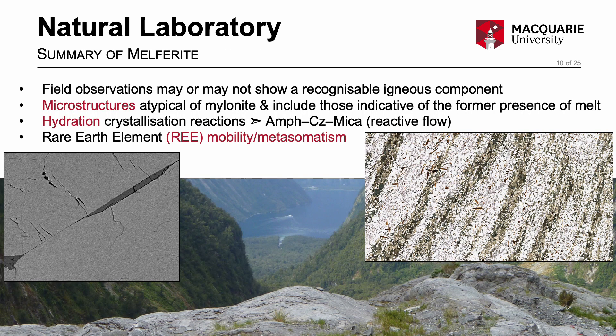To summarise the key characteristics of melphorite: field observations of high strain zones rich in leucosome lenses and dykes are commonly used to infer melt-present deformation and a former melt transfer zone through the crust. However, field observations may not always show a recognisable igneous component. Therefore, microstructures are important — we've found that these are not typical of classic mylonite rocks and include microstructures indicative of the former presence of melt. An interesting point is that the observed melt pseudomorphs must crystallise at the end of the deformation story in order to be preserved in the rock, implying that once the melt crystallises, the rock becomes rheologically hard such that those delicate melt pseudomorph microstructures are preserved through to today.